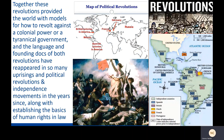Together, these two revolutions — the American Revolution and the French Revolution — provided the world with models for how to revolt against a colonial power or a tyrannical government. The language and founding documents of both revolutions have reappeared in so many uprisings, political revolutions, and independence movements in the years since, along with establishing the basics of human rights in law. In the short term, these revolutions led directly to the Haitian Revolution and Latin American independence movements. But in the long term, they have served as the inspiration and blueprint for revolutions worldwide, not just in the early modern period, but in modern history and even in contemporary times.